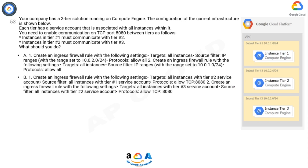Option B: 1. Create an ingress firewall rule with the following settings — Targets: all instances with tier two service account; Source filter: all instances with tier one service account; Protocols: allow TCP 8080. 2. Create an ingress firewall rule with the following settings — Targets: all instances with tier three service account; Source filter: all instances with tier two service account; Protocols: allow TCP 8080.